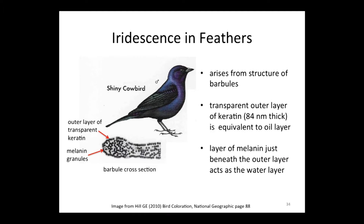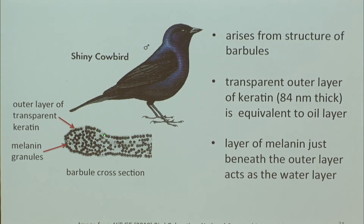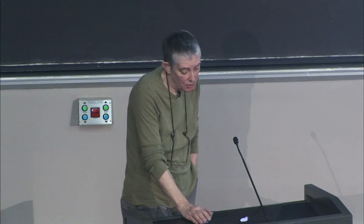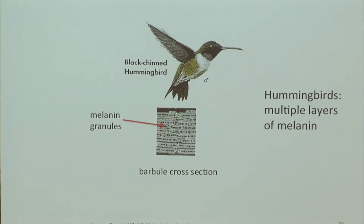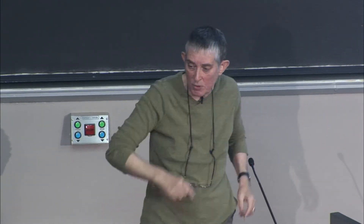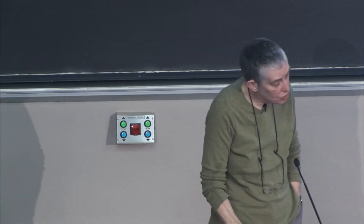Another example is the shiny cowbird — the cross section of a barb shows the same principle, with aligned melanin dots and a thin transparent keratin layer, in this case 84 nanometers thick, even thinner. The black-chinned hummingbird has an even fancier structure: the barbule cross section shows almost plate-like pieces with melanin lined up in the middle of each plate, in multiple layers. Light reflects off these different layers to varying depths, which I think is why hummingbirds have such spectacular iridescence. It's really structures on the hundreds-of-nanometer length scale that give rise to iridescence in bird feathers.